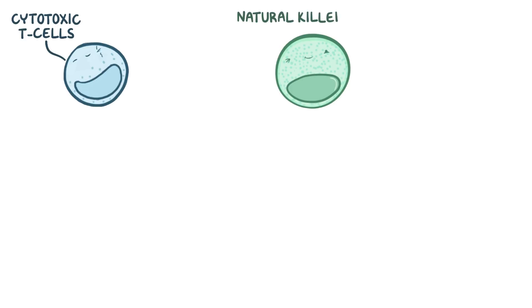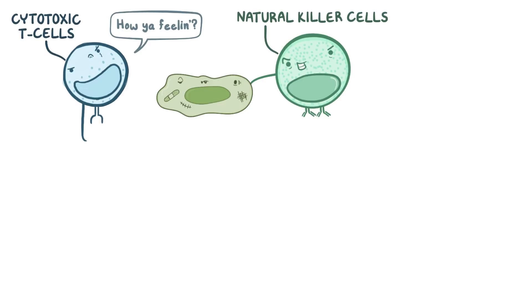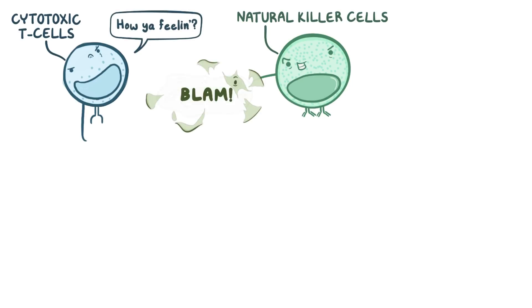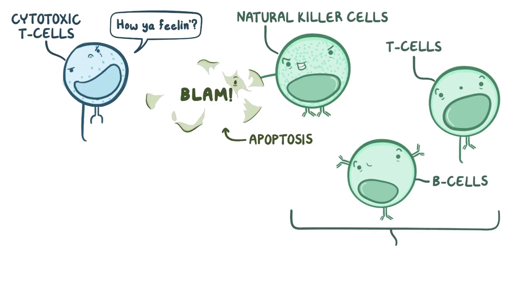Next up are the cytotoxic T-cells and natural killer cells, which also reorganize their cytoskeleton to form an immunological synapse with various body cells to do surveillance and find out if they're healthy or if they're infected or cancerous. If an unhealthy cell is discovered, the immune cells make that unhealthy cell undergo apoptosis, or programmed cell death. Together, the T-cells, B-cells, and natural killer cells protect the body from pathogens as well as cancer.